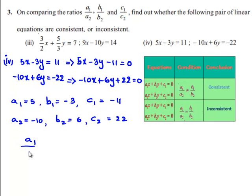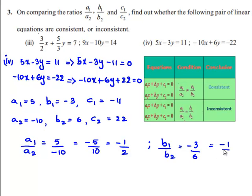Now, a1 by a2 is equal to 5 divided by minus 10 which is minus 5 by 10 which is minus 1 by 2 and b1 by b2 is equal to minus 3 by 6 which is minus 1 by 2.